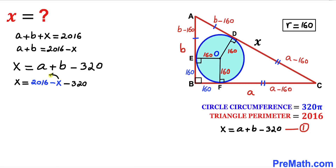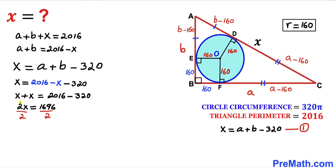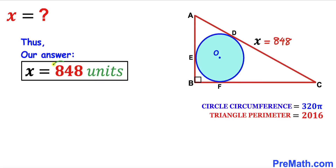Moving x to the left-hand side gives us x plus x equals 2016 minus 320, so 2x equals 1696. Dividing both sides by 2, our x value turns out to be 848 units. So the side length x is 848 units. Thanks for watching — please don't forget to subscribe for more exciting videos.